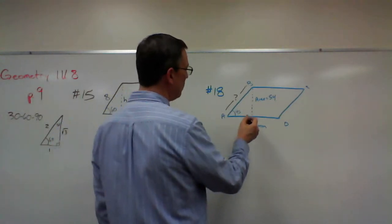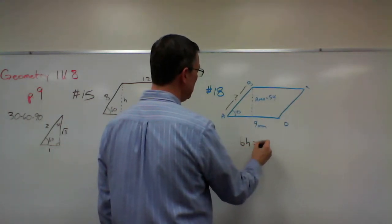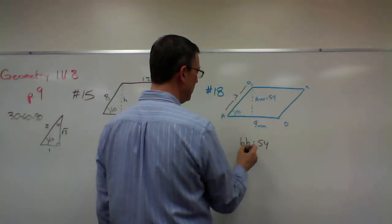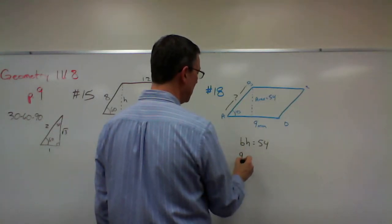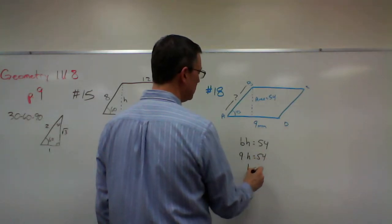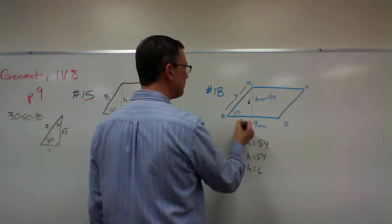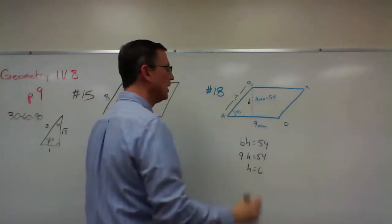Base times height is the area, 54. The base is 9, so 9 times the height has to be 54. So the height must be 6. So this is 6. What would this side be?